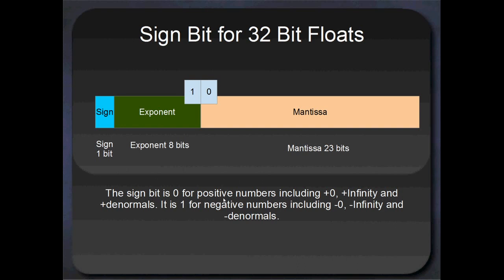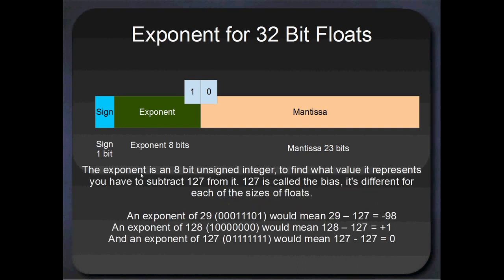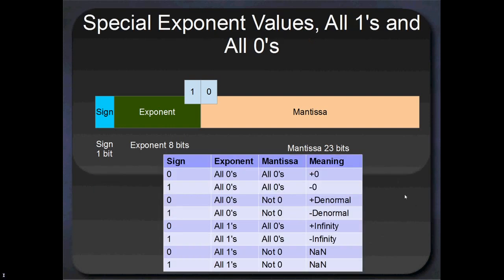The sign bit is 0 for positive numbers or 1 for negative numbers. The exponent is a biased exponent, and the value written there — the unsigned 8-bit integer — to get the actual power of our exponent, we've got to subtract 127 from it. Or, as we'll see when figuring out the actual bit pattern, when we get our power we've got to add 127 to it. 127 is the bias. A couple of little examples here, but we'll see how this all works later.